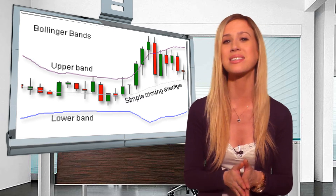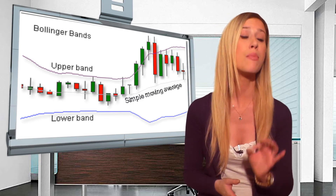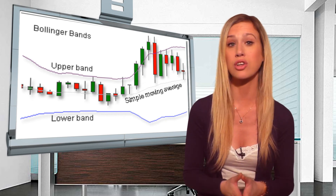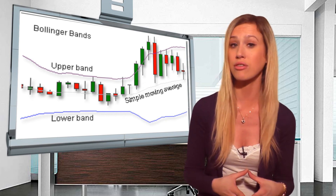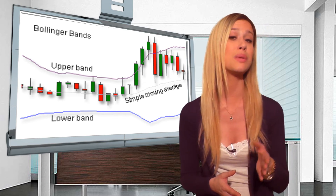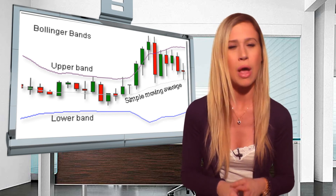The center line is seen as an exponential moving average. The price channels are seen as standard deviations of the chart that is being studied.